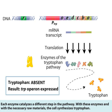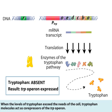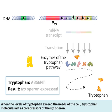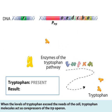With these enzymes and with the necessary raw materials, the cell synthesizes tryptophan. When the levels of tryptophan exceed the needs of the cell, tryptophan molecules act as co-repressors of the TRP operon.